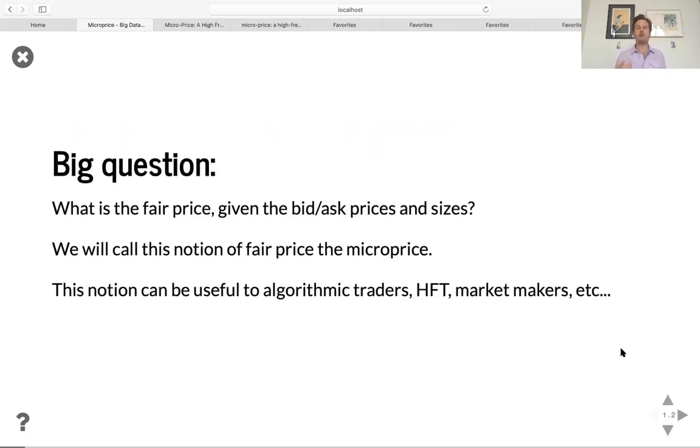So the big question is what is the fair price given bid and ask prices and sizes. And these are quantities that really only an algorithm can keep track of because they update at the millisecond timescale. The fair price also called the true price among practitioners or sometimes the fundamental or the efficient price in academia. And we're going to just define a notion of micro price. And this, as I mentioned before, is a notion that can be useful for algorithmic traders, HFT, and market makers.